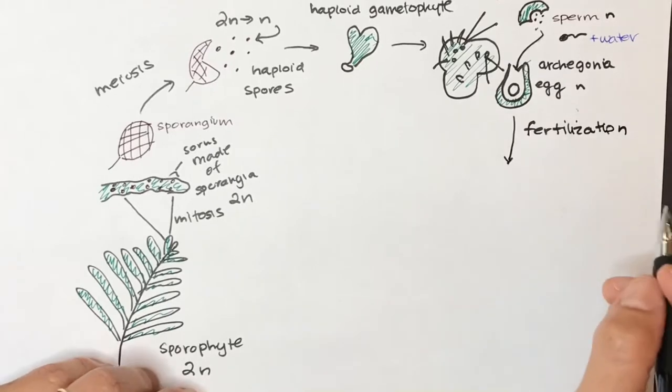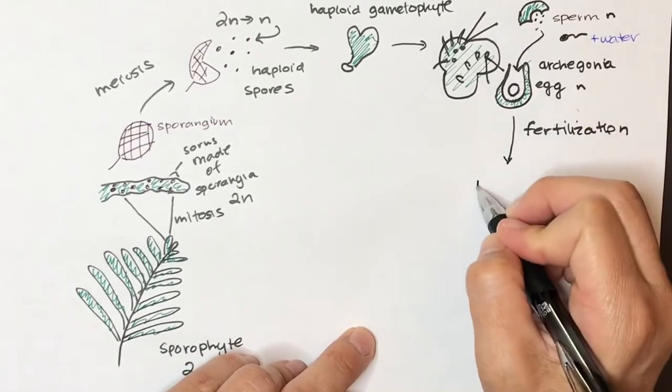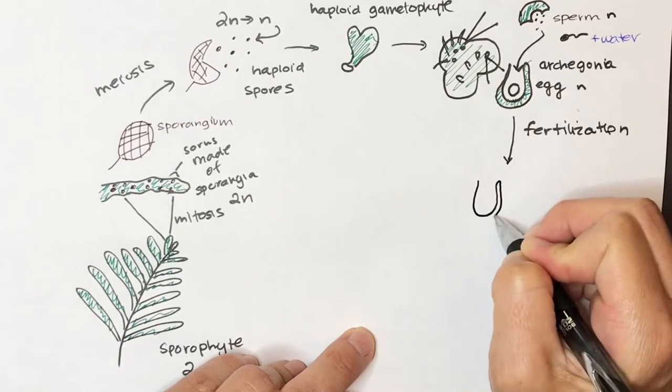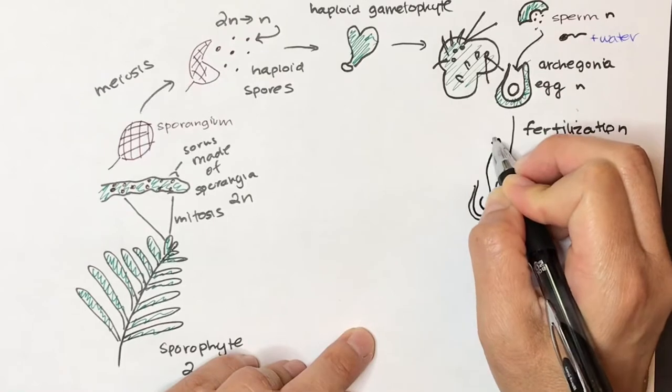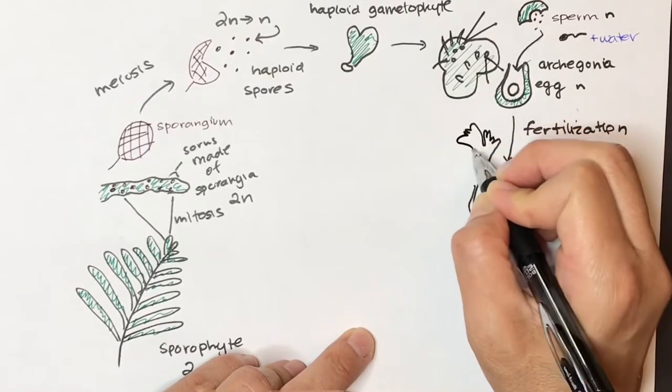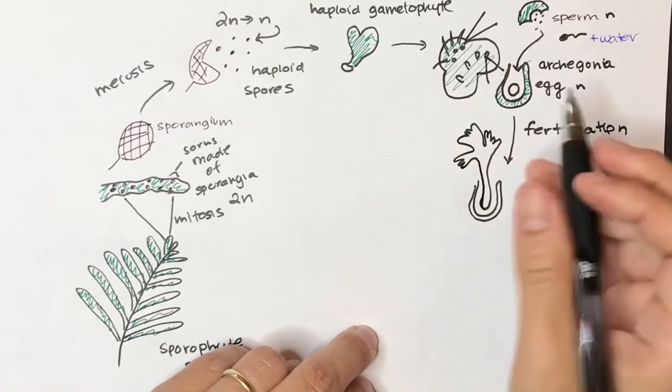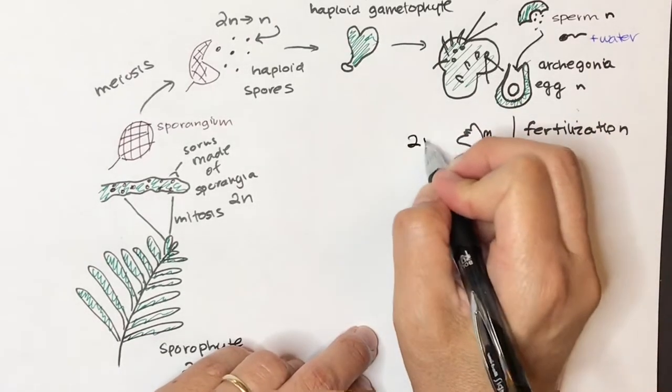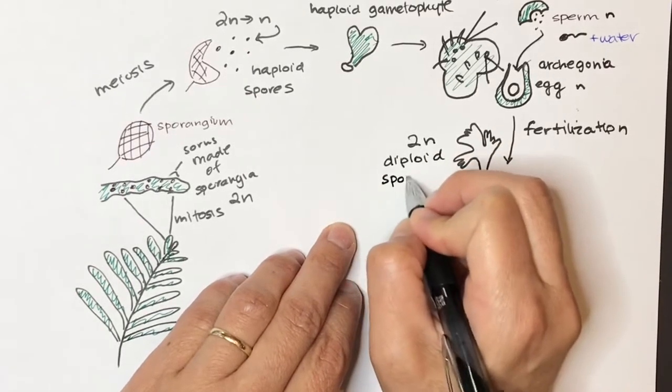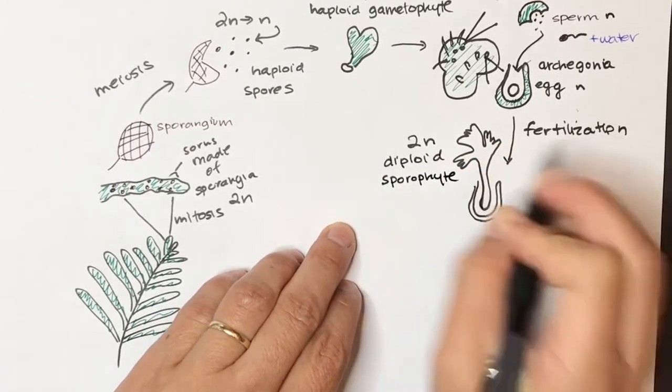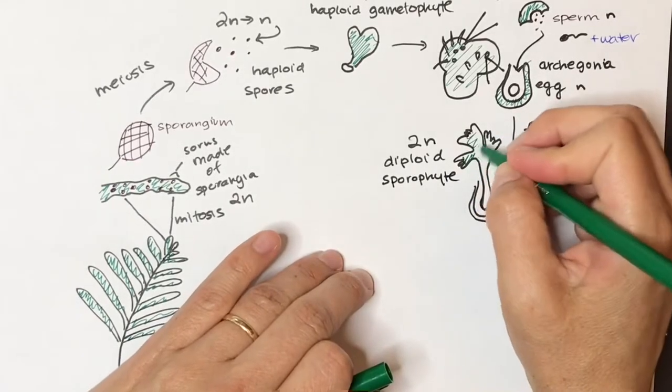So we're going to get a little diploid zygote growing in the archegonium. There we go, just like that. And so this is now going to be our 2N diploid baby sporophyte. So this is our little sporophyte.